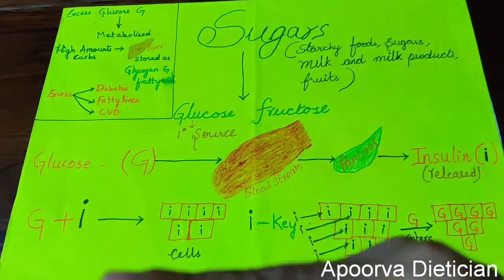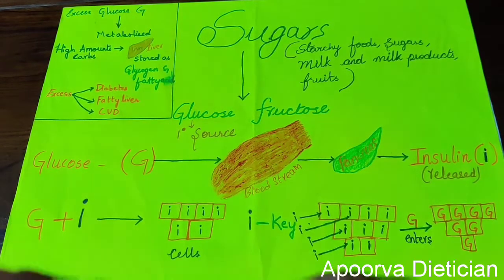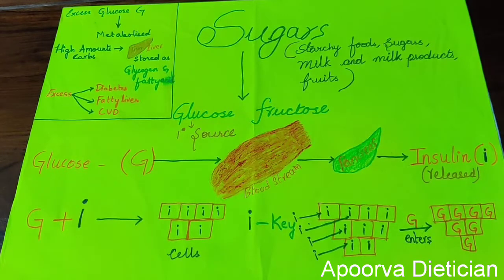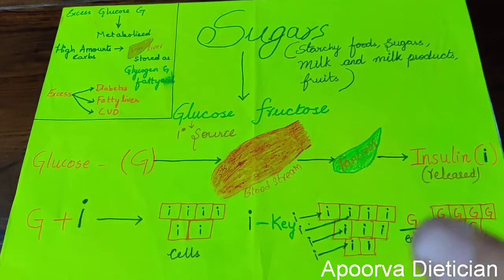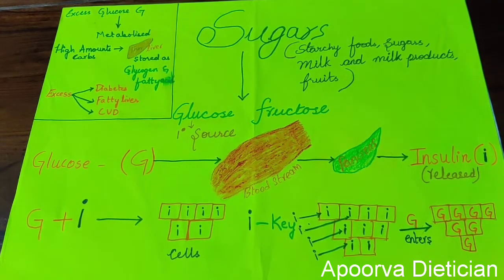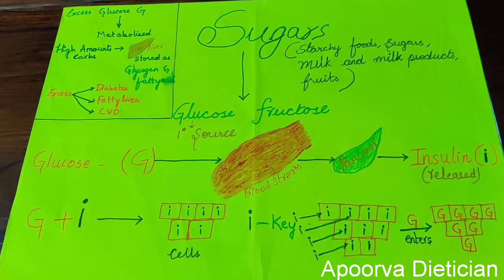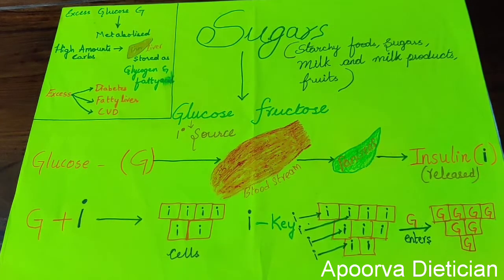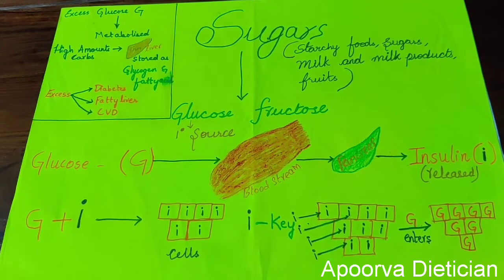Insulin acts as a key — it opens the lock of the cell so that glucose can enter. Once glucose enters the cells, it releases energy and helps perform the various kinds of functions in our body.